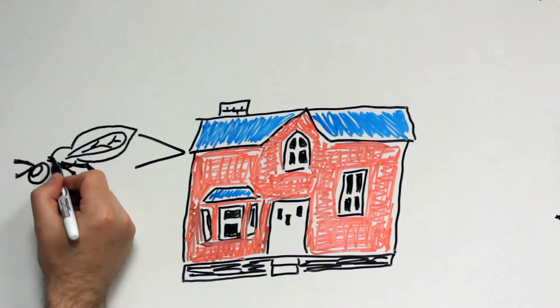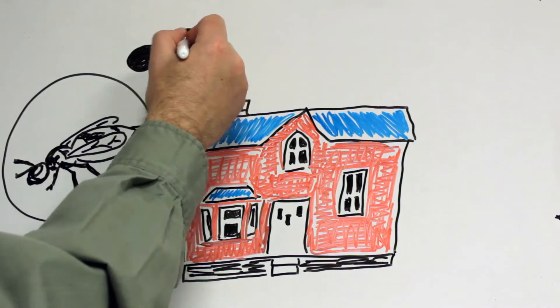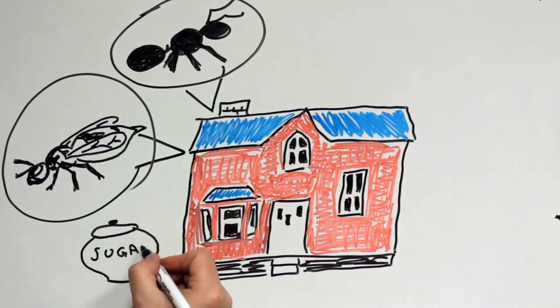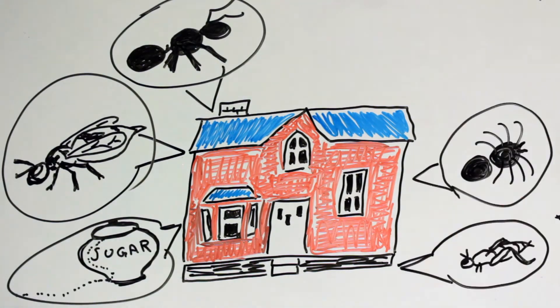Yellowjackets and wasps enjoy the shelter of eaves and siding. Carpenter ants haul out wooden timbers for shelter and head to the kitchens and bathrooms for water. Little Odor's house ants head for the sugar bowl on the counter. Crickets, spiders, fleas, well, you get the idea.